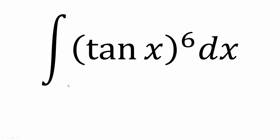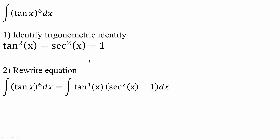In this video we will solve this integral. The first step is to identify a trig identity. We know that tan squared x is equal to secant squared x minus 1. Next I will rewrite this equation incorporating this identity.